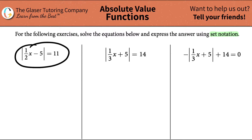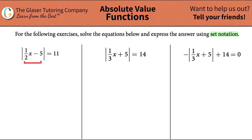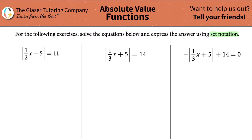So the first one: we have the absolute value of one-half x minus 5, and that all equals 11. In algebra, the object of the game is to solve for x. Everything on the left-hand side is trapped inside this absolute value sign. Remember, what an absolute value sign does is that whatever the input is, it always outputs a positive number. So in this case, it's saying whatever is in here equals positive 11.